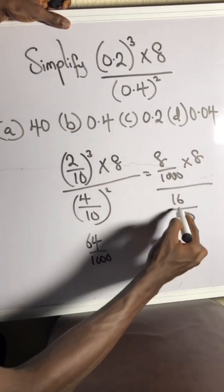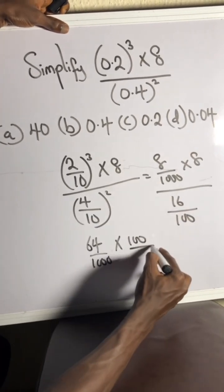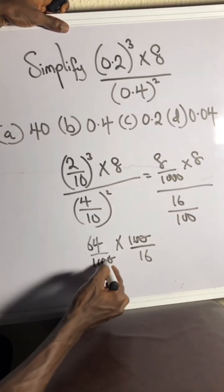Okay, 64 times. You turn this upside down, that gives you 100 over 16. Okay, 2 zeros take away.